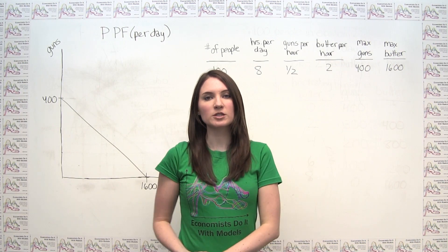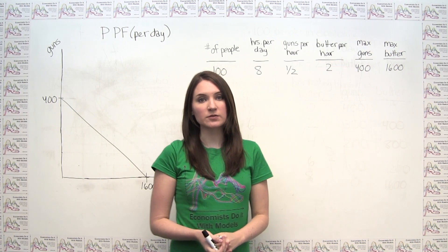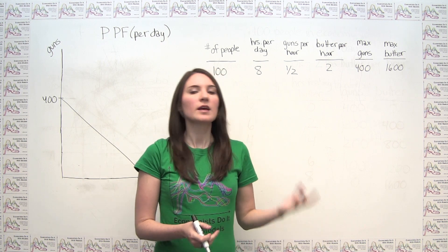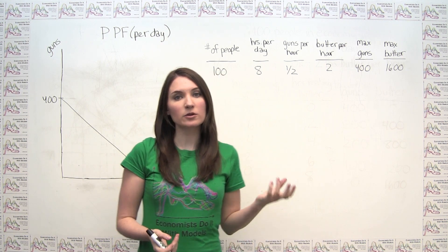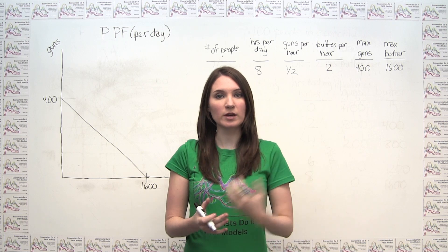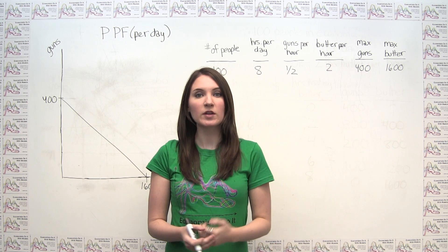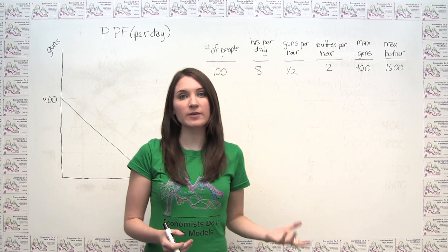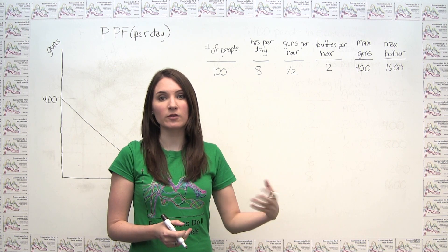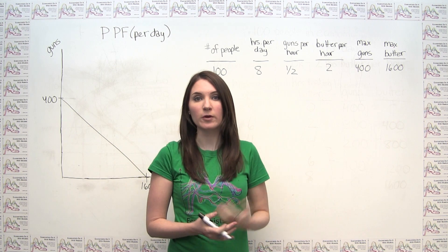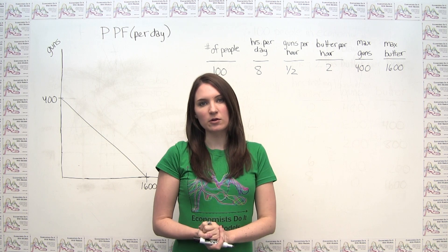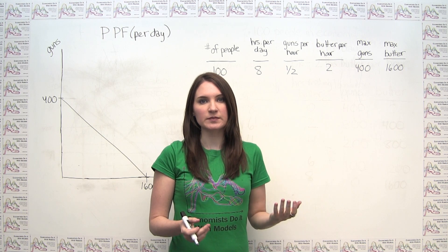We can even use the production possibilities frontier to represent economic growth. In this setup, economic growth is represented by a shift in the production possibilities frontier, since positive economic growth would mean that you're able to make more of both of the goods than you could before. We can think about economic growth as arising for a number of reasons.